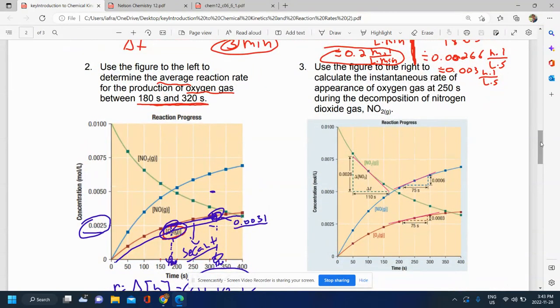So here we have a figure, the same figure as when we did the example of the average rate, except this time we're going to focus on instantaneous rate.